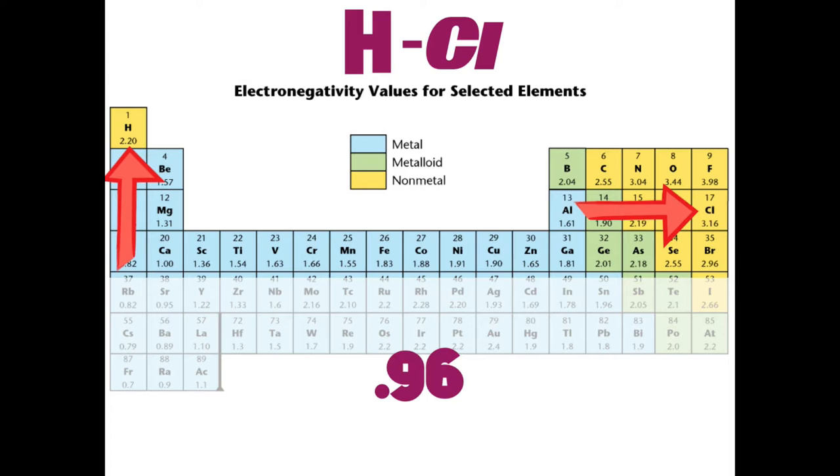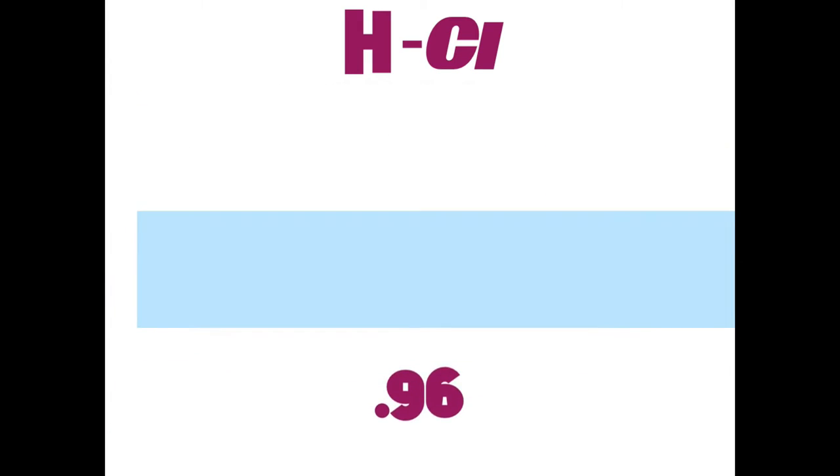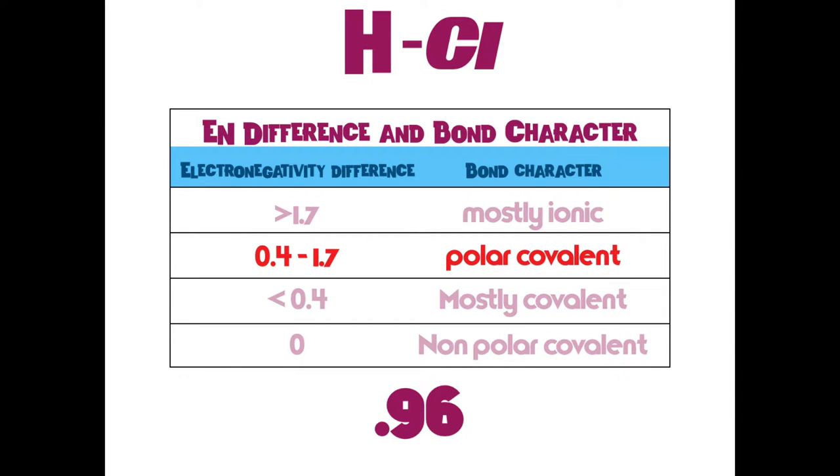So now we want to determine, what kind of bond is it? What kind of bond character does this have? So we can take that value and go to our chart and see that it lies in between 0.4 and 1.7. So this gives us a definition, a clear mathematical definition of what kind of character a bond has. And this we would say is a polar covalent.